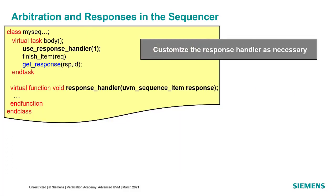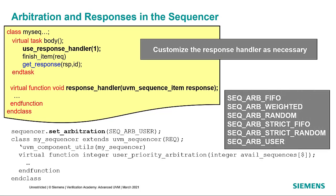You also have the option of writing your own response handler, though we don't recommend it. If you set useResponseHandler to one, when the driver puts a response the sequencer will call responseHandler, which is a method defined in the appropriate sequence — it's then up to you to take that response and do something with it, like incrementing a counter, printing a message, or sending a copy somewhere. You can also customize the arbitration of the sequencer. In addition to the default FIFO scheme, you can choose weighted random, pure random, or FIFO or random according to priority. You can also create your own arbitration scheme by choosing the SEQ_ARB_USER value, extending uvm_sequencer_base and adding your own user_priority_arbitration method that takes a queue of available sequences.